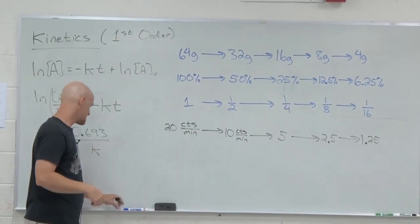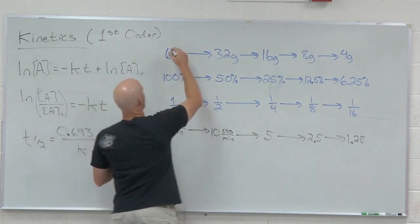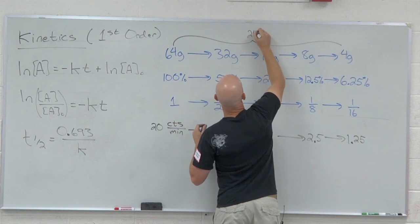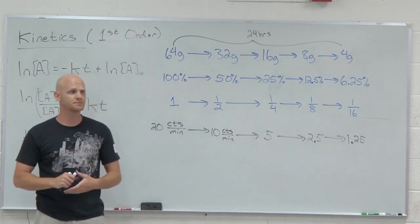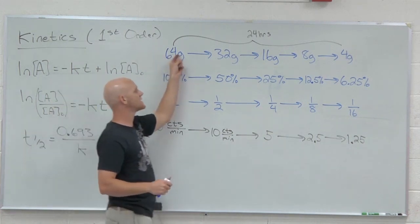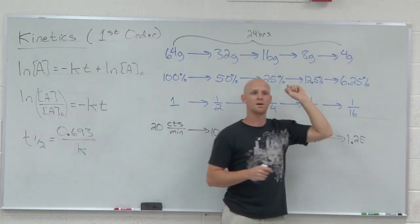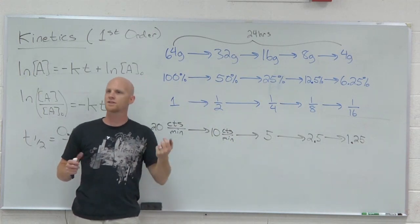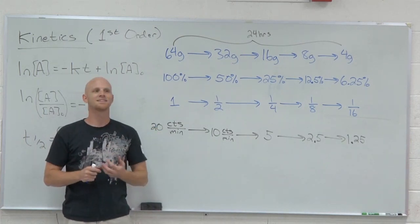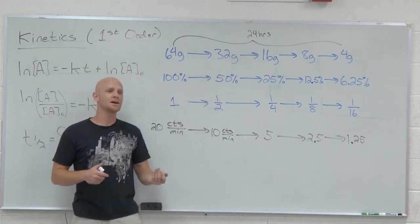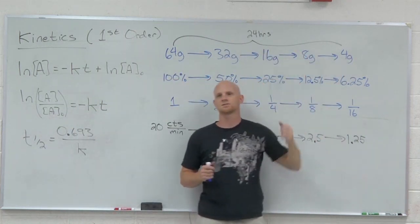So the types of questions you might get on something like this is let's say I told you that you started with 64 grams of radioactive substance. And 24 hours later you only had 4 grams left. The question you might get is what's the half-life? Well how many half-lives have we gone through to get all the way to 4 grams? One, two, three, four. We've gone through four half-lives and it took a total of 24 hours. So then how long must each of those half-lives be? Split 24 hours into four equivalent periods of time and you get 6 hours. So each half-life was 6 hours.